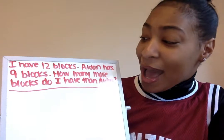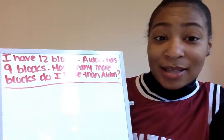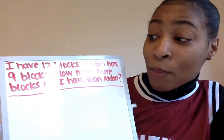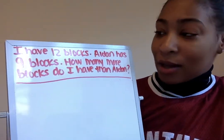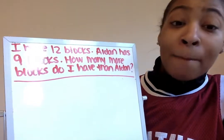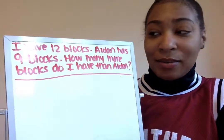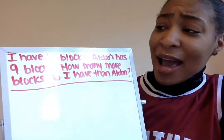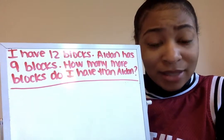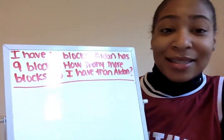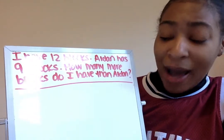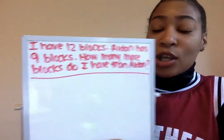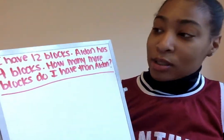I'm going to read this problem three times today. It says: I have 12 blocks. Aiden has nine blocks. How many more blocks do I have than Aiden? I have 12 blocks. Aiden has nine blocks. How many more blocks do I have than Aiden? One more time — I have 12 blocks. How many blocks does Ms. Washington have? 12. Aiden has nine blocks. How many blocks does Aiden have? Just nine. How many more blocks do I have than Aiden? There are a couple of numbers and words that I noticed that are super important to help us solve this problem.